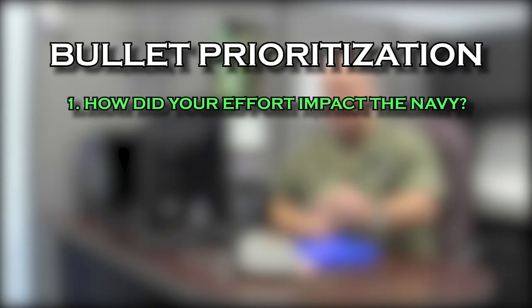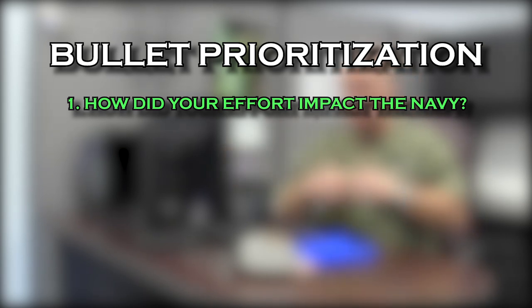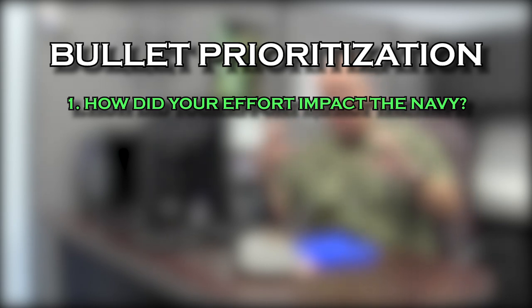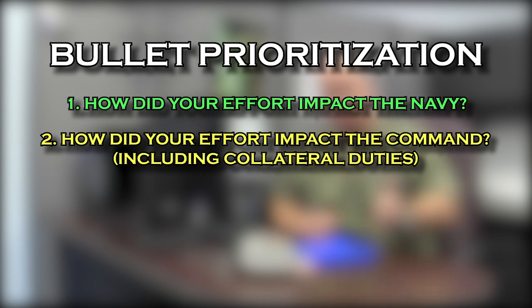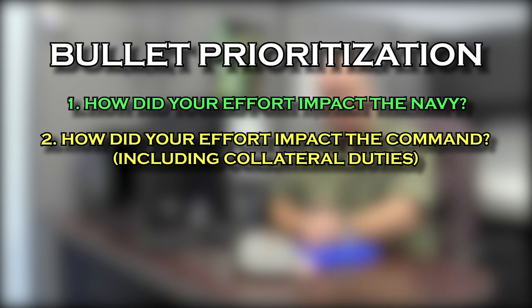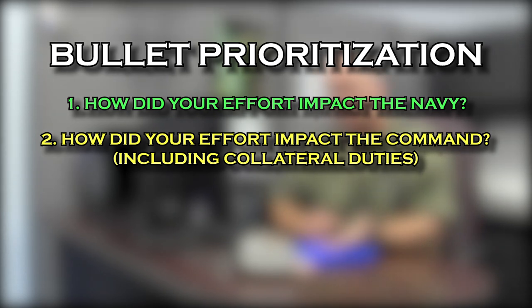I like to prioritize them like this: start with how did your effort impact the Navy as a whole? That DET I talked about was training pilots for the Navy in the adversary mission — that has a Navy-wide effect. Next, talk about the impact on your command, and include your collateral duties. If you have a collateral duty on the front page of your eval, you better have something in the back explaining what you did with it, or a selection board will think you didn't do anything with it.